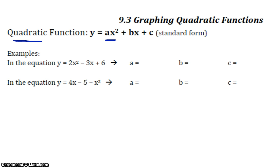Now, ax squared plus bx plus c is the standard form for a quadratic function. a is always the coefficient of the x squared term. b is always the coefficient of the x term.